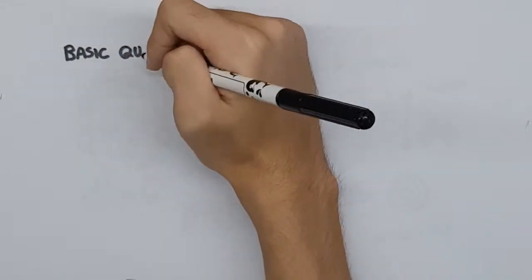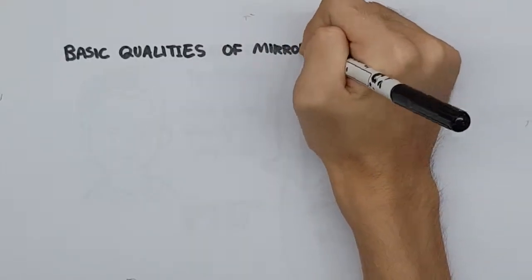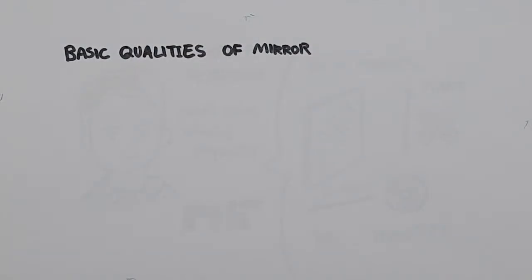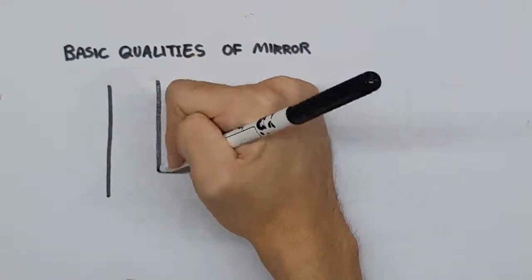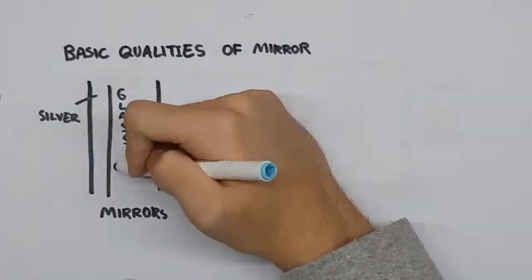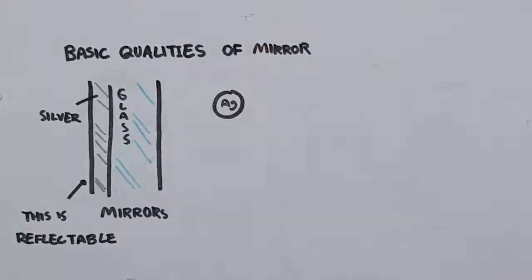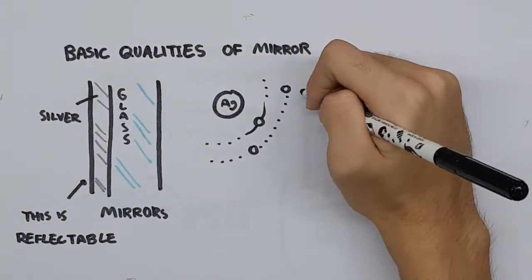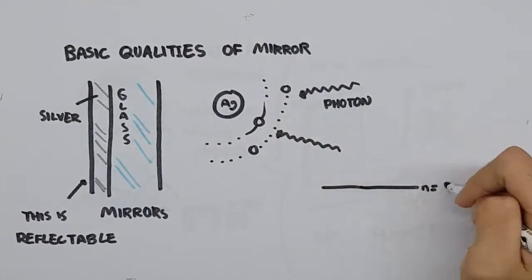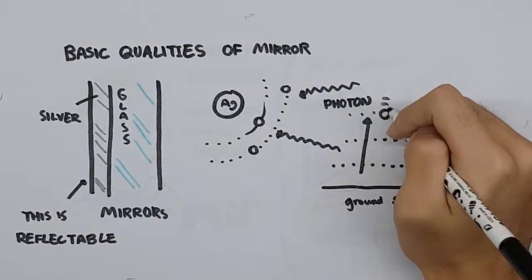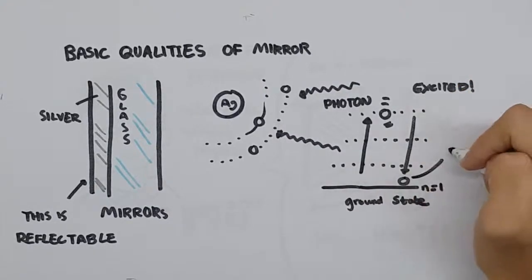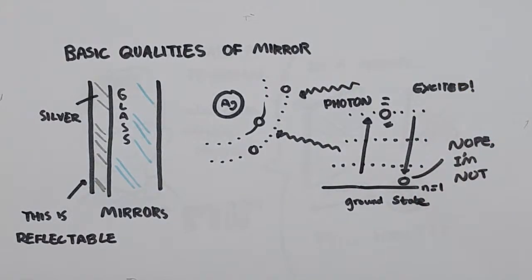First, we have to understand a few basic qualities of mirrors. Mirrors are able to reflect rays of light because of the reflective material beneath the glass, which is mainly made up of silver. The electrons of the silver atoms absorb light and get excited from the energy, increasing in energy level. They then return to their ground state, re-emitting the light that it had absorbed.